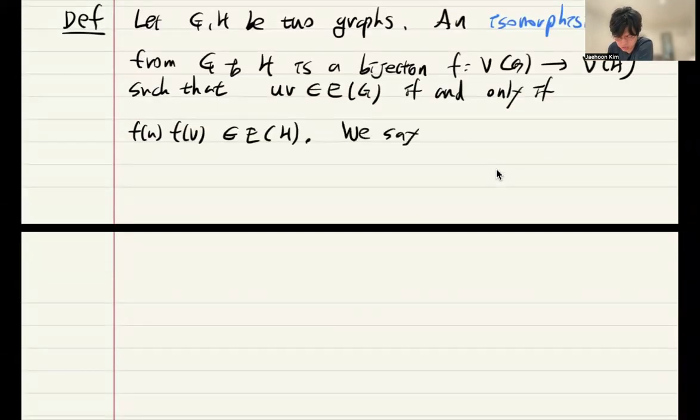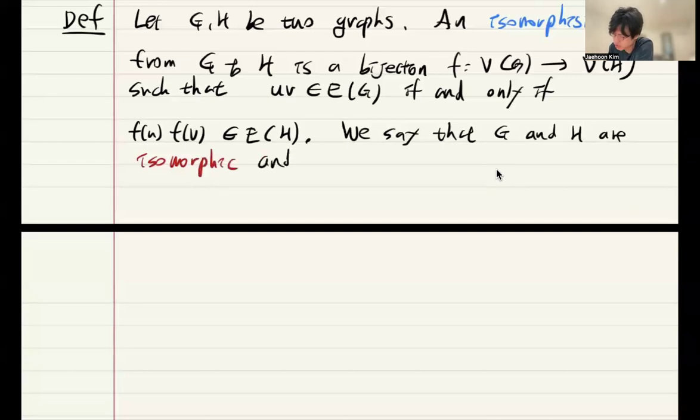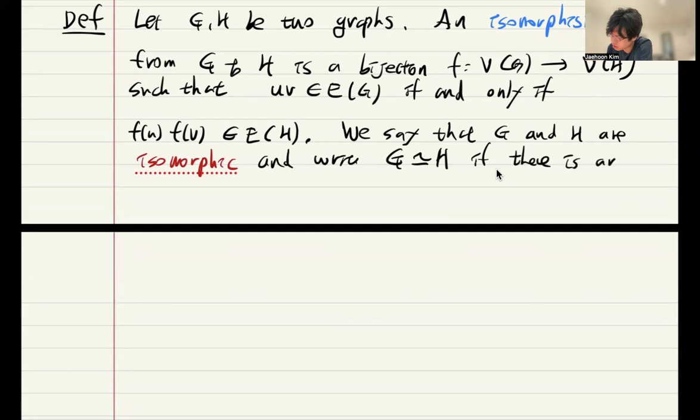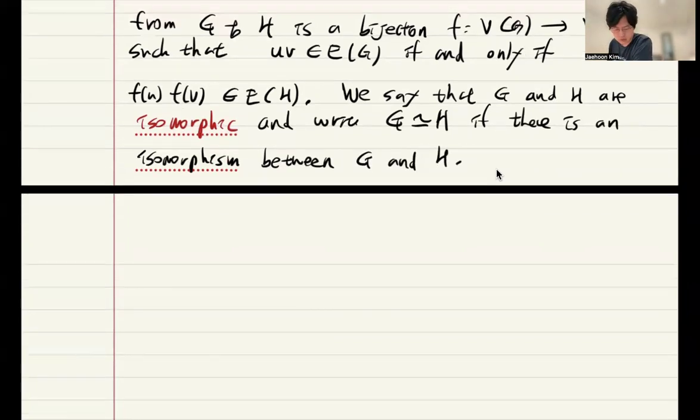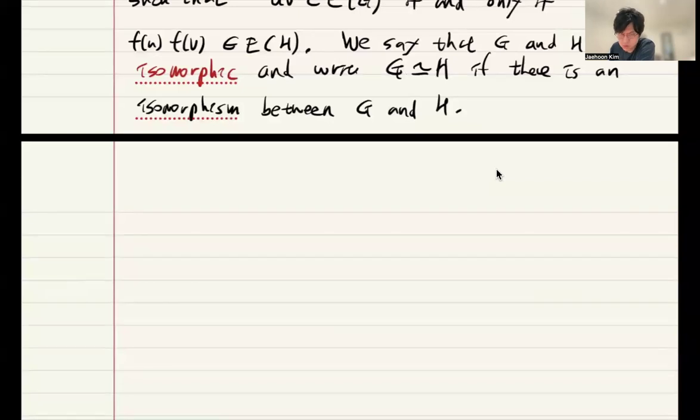And we say that G and H are isomorphic, and we write that G and H are isomorphic. So, under this information, it's easy to check that this isomorphism relation is an equivalence relation.